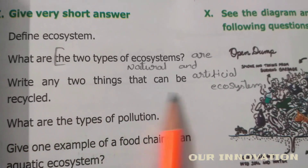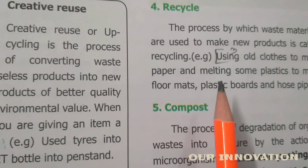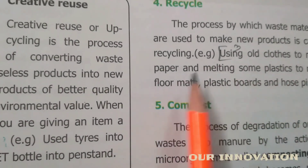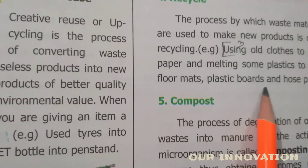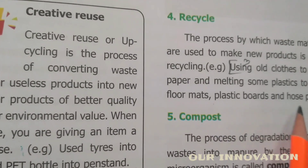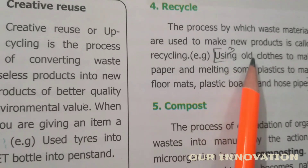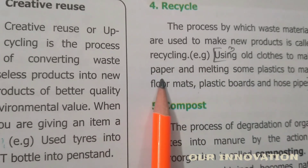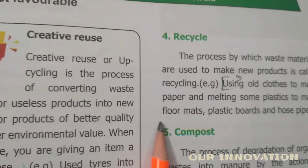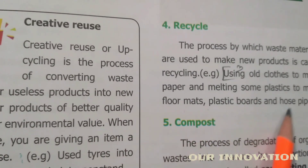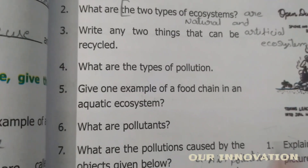Write any two things that can be recycled. From page number 57: using old clothes to make paper, and melting some plastics to make floor mats, plastic boards, and hose pipes. So you can write: old clothes used for making paper, and melting some plastics to make floor mats.